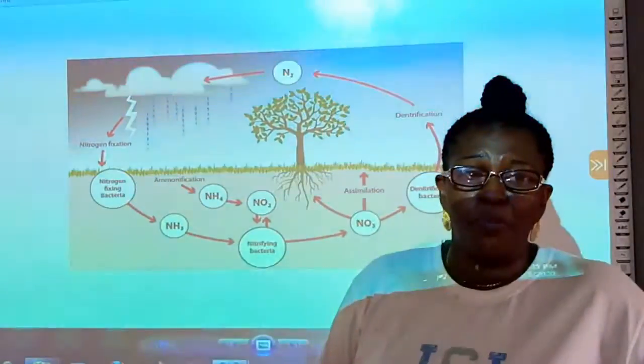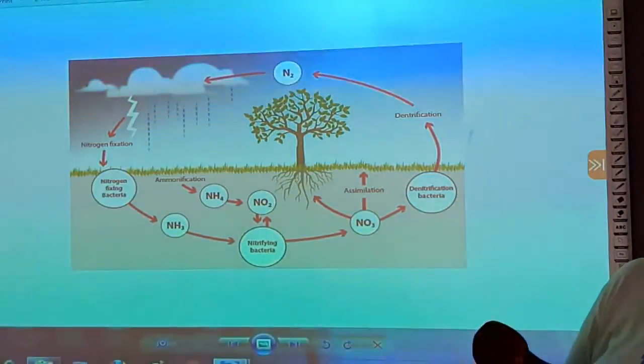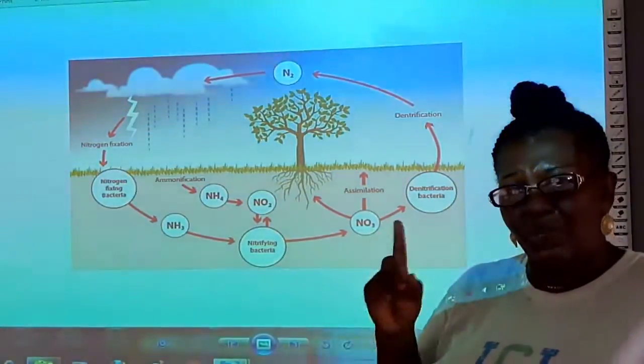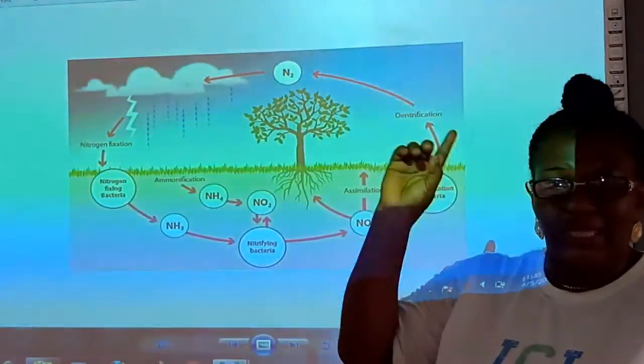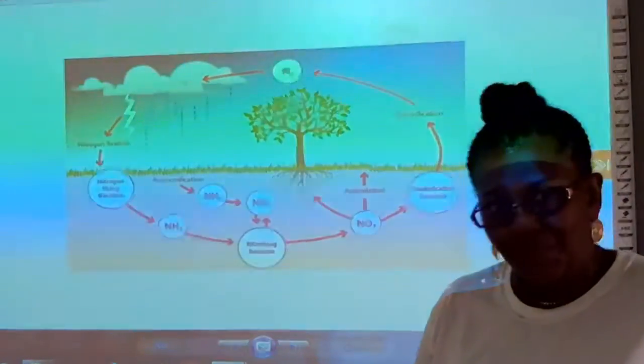This plant can also be eaten up by animals. When animals eat it, it becomes animal protein. Remember, we are tracing the nitrogen. It was in the air and then it entered into the soil in form of nitrates.